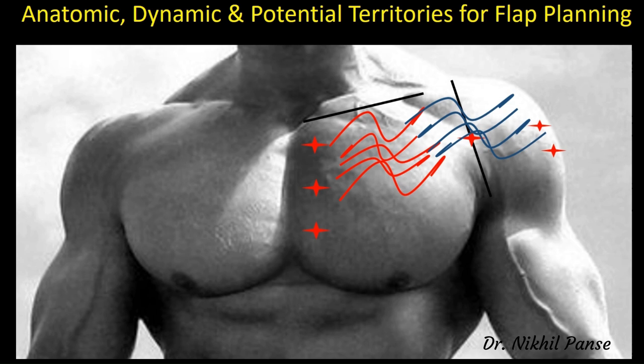Now coming to the anatomical, dynamic, and potential territories. The territory from the lateral border of the sternum to the delto-pectoral groove forms the anatomical territory of the DP flap. This is the territory which can be safely harvested without a delay procedure. It is entirely supplied by the internal mammary artery, although towards the end it has some communications with the branches of the thoracoacromial artery. This procedure does not require any delay — this is the safest territory of the DP flap.